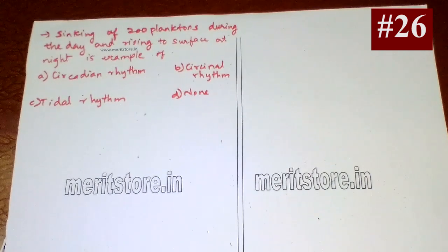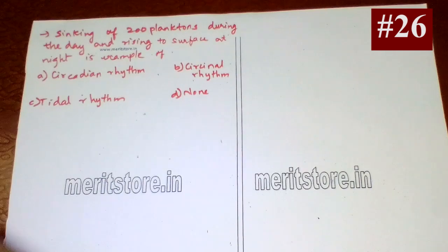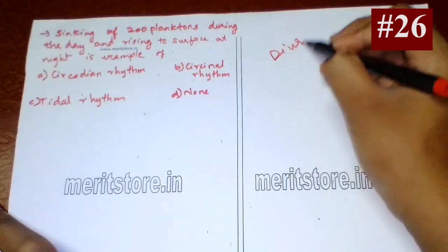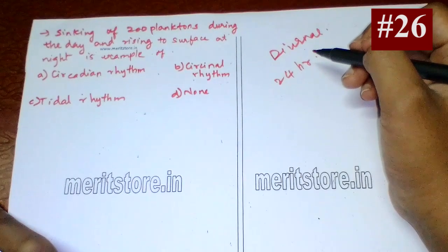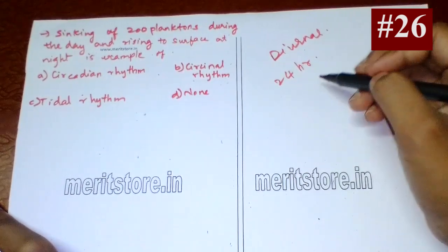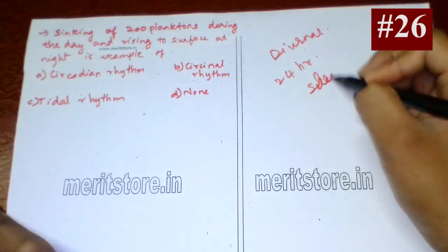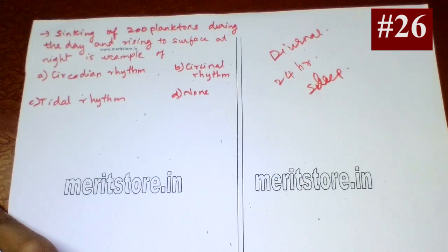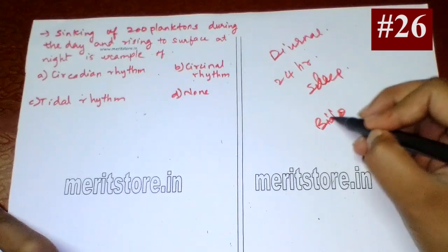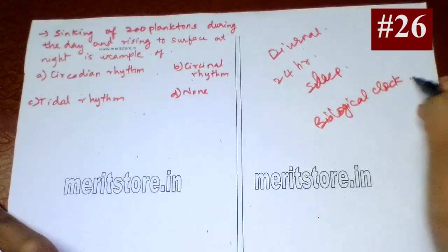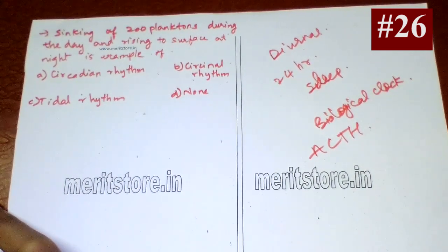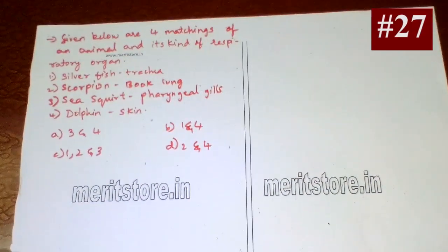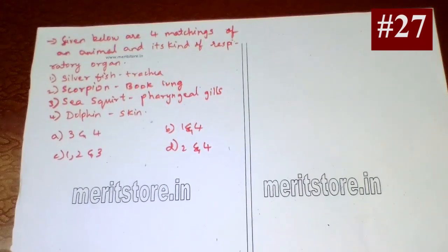The sinking of zooplankton during the day and rising to the surface at night is an example of circadian rhythm. Circadian rhythm, also known as diurnal rhythm, is any 24-hour periodicity in the behavior or physiology of animals or plants — examples are the sleep-activity cycle in many animals and growth movements of plants. Circadian rhythms are generally controlled by a biological clock. For example, ACTH hormone level remains high in the morning and declines during the night. Option A is correct.